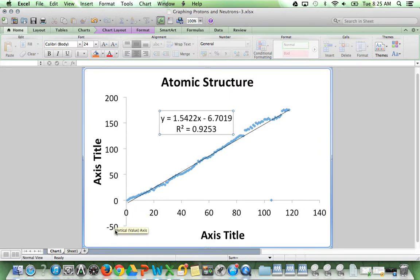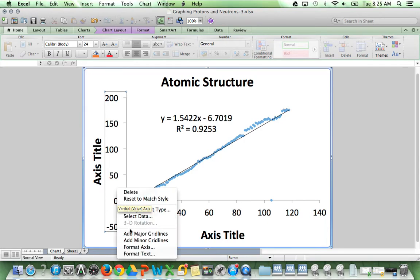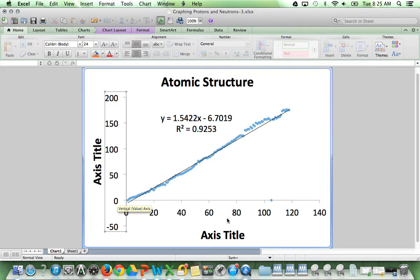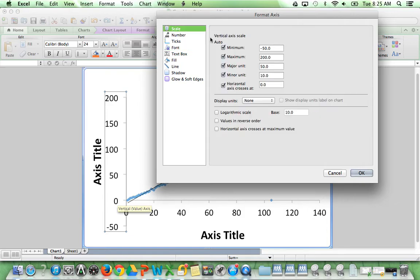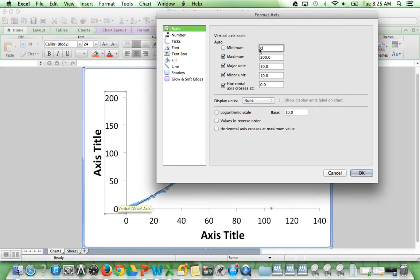Next, we're going to fix this axis. Two-finger select and then two-finger click. Format axis. We need to change the scale. Make our minimum 0. Our maximum can stay at 200 with every 50 units marked.